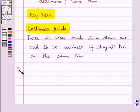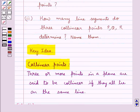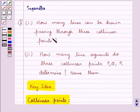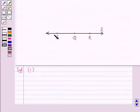Let us move on to the solution for this question now. The first part of the question says: How many lines can be drawn passing through three collinear points? So given three collinear points P, Q, R,